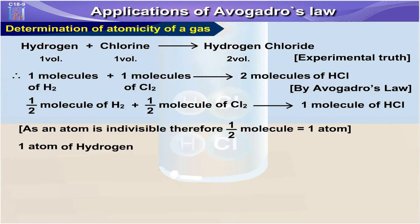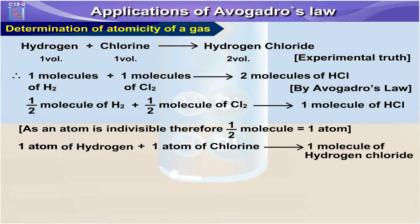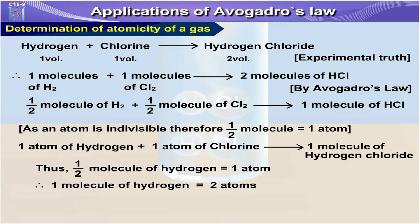So one atom of hydrogen plus one atom of chlorine gives one molecule of hydrogen chloride. Thus half molecule of hydrogen is one atom, which means one molecule of hydrogen would be two atoms.